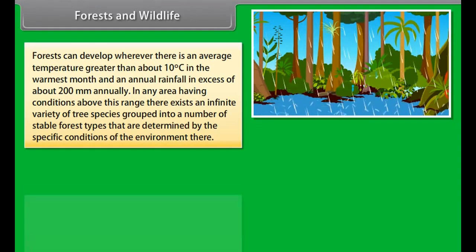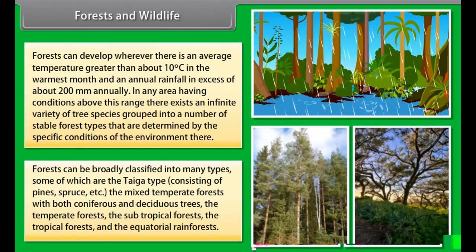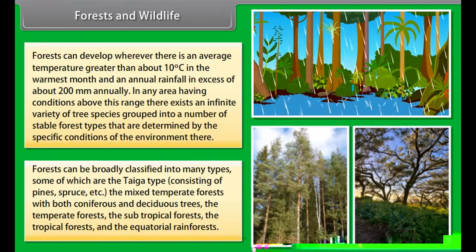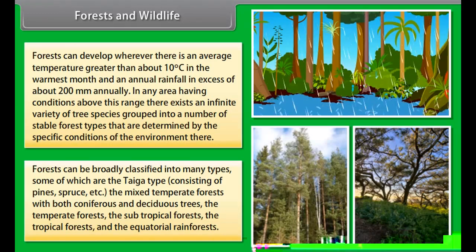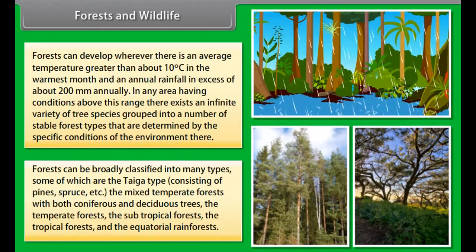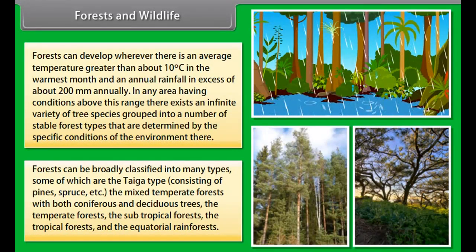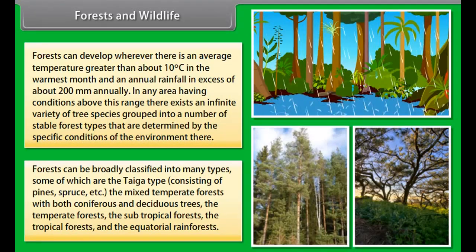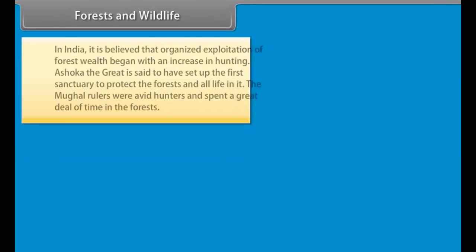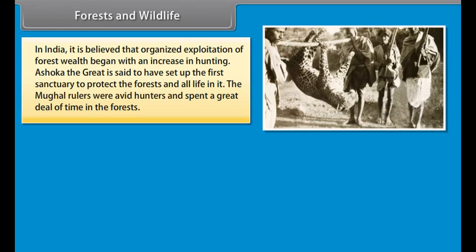Forests can develop wherever there is an average temperature greater than about 10 degrees Celsius in the warmest month and an annual rainfall in excess of about 200 mm annually. In any area having conditions above this range, there exists an infinite variety of tree species grouped into a number of stable forest types that are determined by the specific conditions of the environment there. Forests can be broadly classified into many types.